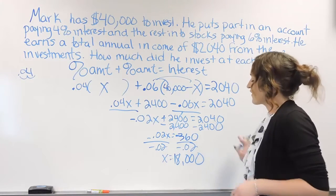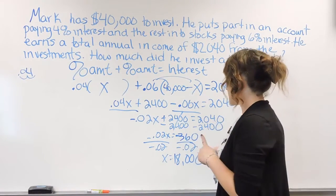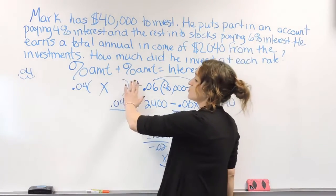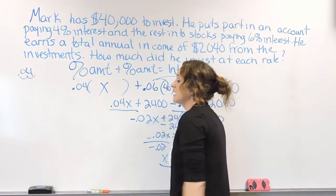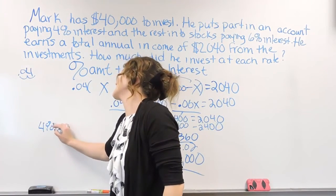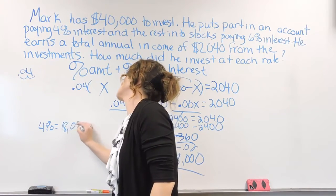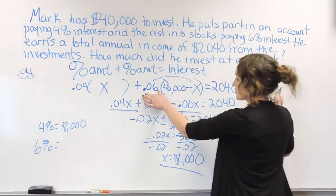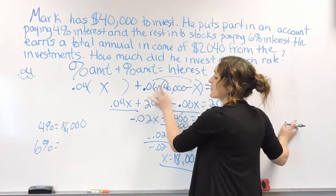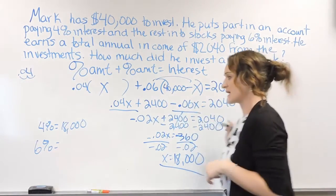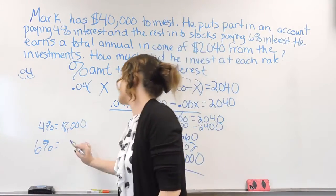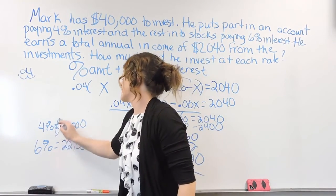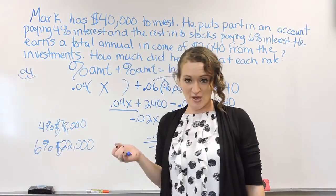So that means he put $18,000 into the account we labeled X — the one at 4%. To figure out how much went into the 6% account, we take $40,000 minus $18,000, which gives us $22,000. So he invested $18,000 in the 4% account and $22,000 in the 6% account.